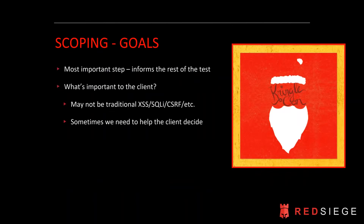So scoping — why is it important? Scoping informs the entire rest of the pen test. When you do a proper scope, you have an informed pen test, and you're able to test the application for common kinds of vulnerabilities, but also find the things that are important to the client, which may not be just SQL injection and cross-site scripting. It may be logic kinds of vulnerabilities, such as preventing user-to-user interaction, preventing privilege escalation to admin roles, or ensuring shopping cart discounts can't be abused.